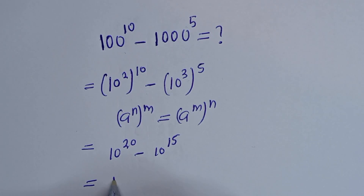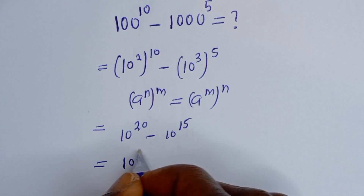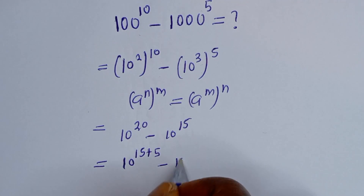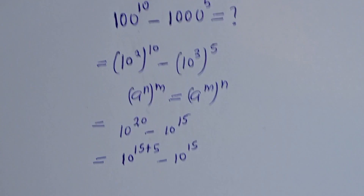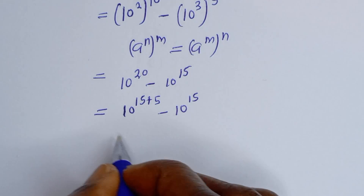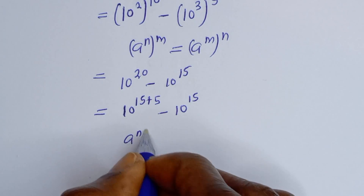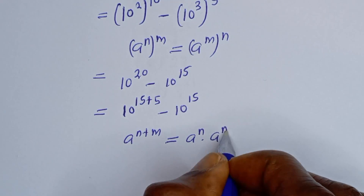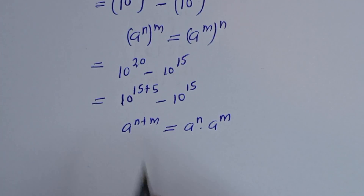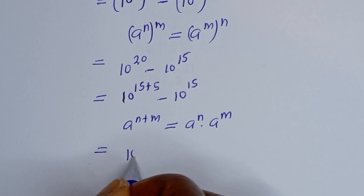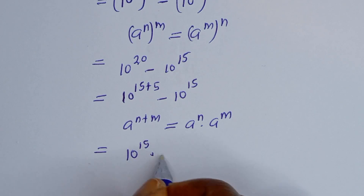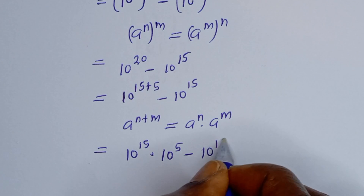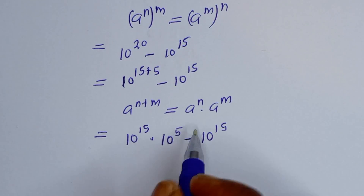Then 10 raised to power 20 can be written as 10 raised to power 15 plus 5, minus 10 raised to power 15. Take note of this rule: if you have a raised to power n plus m, this is equal to a raised to power n, multiplied by a raised to power m. So this becomes 10 raised to power 15, multiplied by 10 raised to power 5, minus 10 raised to power 15.